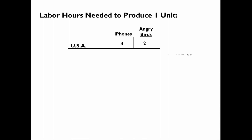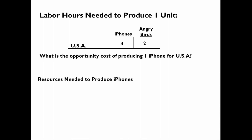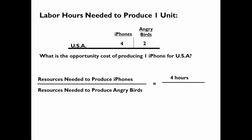What is the opportunity cost of producing an iPhone for the US? We know that it takes 4 hours for the US to produce an iPhone, and in that time they could produce 2 Angry Birds because it takes them 2 hours to produce an Angry Birds. So we divide the resources to produce iPhones over the resources to produce Angry Birds. That gives you the opportunity cost of producing an iPhone, which is 2 Angry Birds.